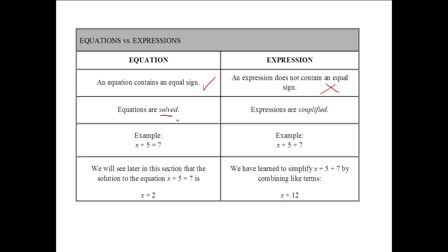You solve an equation, but expressions are simplified. X plus 5 equals 7 is an example of an equation — notice the equal sign. X plus 5 plus 7 is an example of an expression — no equal sign. We will see later that the solution to the equation x plus 5 equals 7 is 2. For the expression x plus 5 plus 7, we simplify by combining like terms, and the answer is x plus 12.